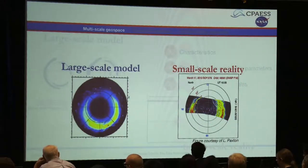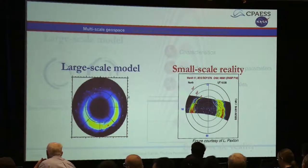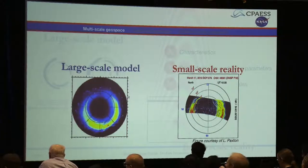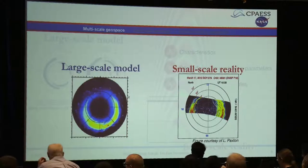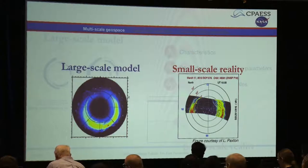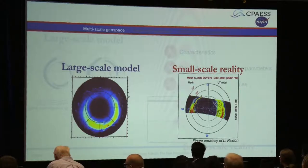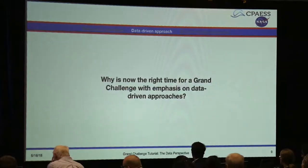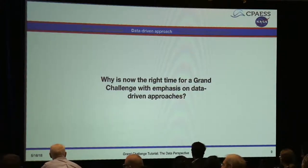As another example, looking at our large-scale model of the aurora—the Ovation Prime output model—we see a smooth picture that doesn't capture much dynamics. But looking at the small-scale reality from a UV image from the DMSP spacecraft, we see a lot of fine-scale dynamics that illustrate a very different picture. We have new understanding and new data to study this, raising the question: why is now the right time for a grand challenge emphasizing data-driven approaches?